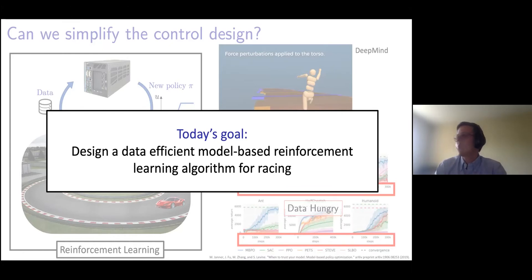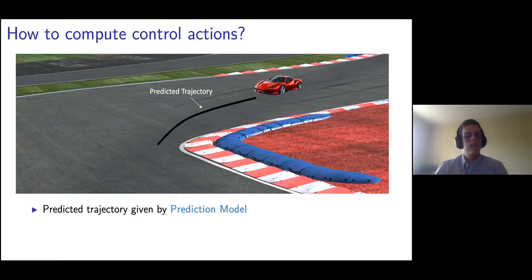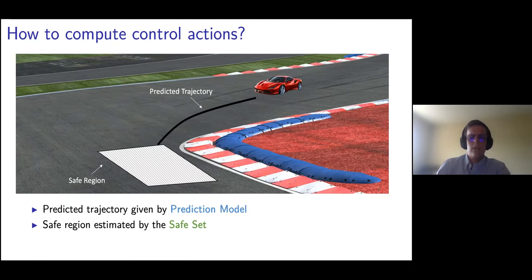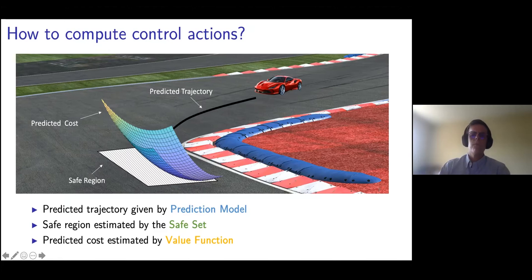Before diving into the details, I would like to show you one possible strategy that can be used to compute control actions. Given the state of our vehicle, we would like to compute the steering and acceleration command. We might want to forecast the trajectory of our vehicle over a short horizon, and in order to guarantee safety, we want to make sure that the predicted trajectory lands in a safe region — for instance, a safe region where turning is available. When planning over a short horizon, we want to account for the shape of the track beyond our prediction horizon, and we would also like to decide our strategy based on the future track shape. For this reason, we often design a terminal cost that tells us the predicted cost beyond our prediction horizon. With this strategy, we can use a prediction model, a safe set, and a value function to compute our control action.